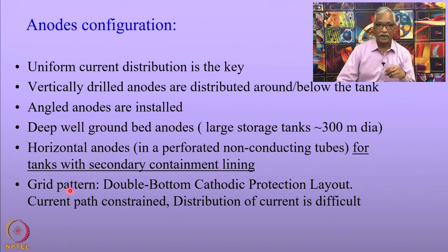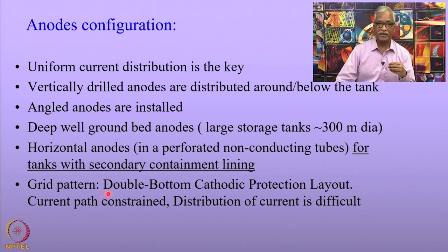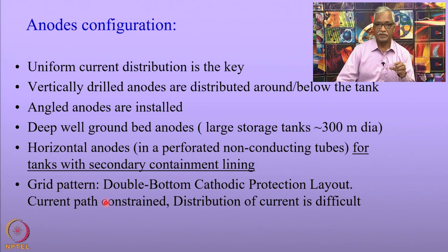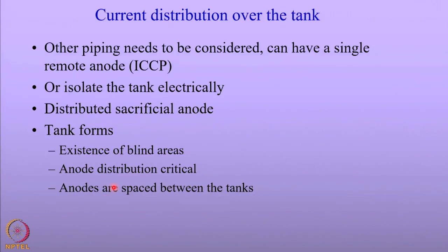Deep grid pattern anodes are also used where double bottom cathodic protection layouts are required, but the problem here is the current paths are constrained, making current distribution very difficult. We have talked about current distribution at the bottom of the tank, but the current distribution over the top of the tank is also equally important.